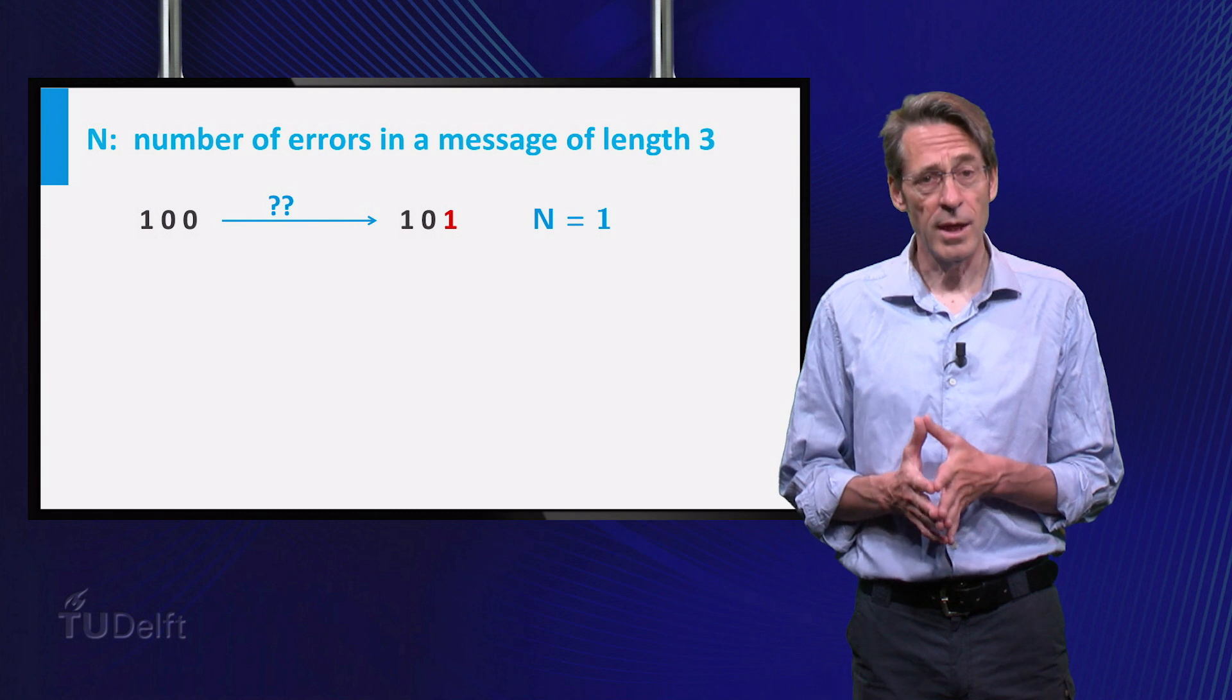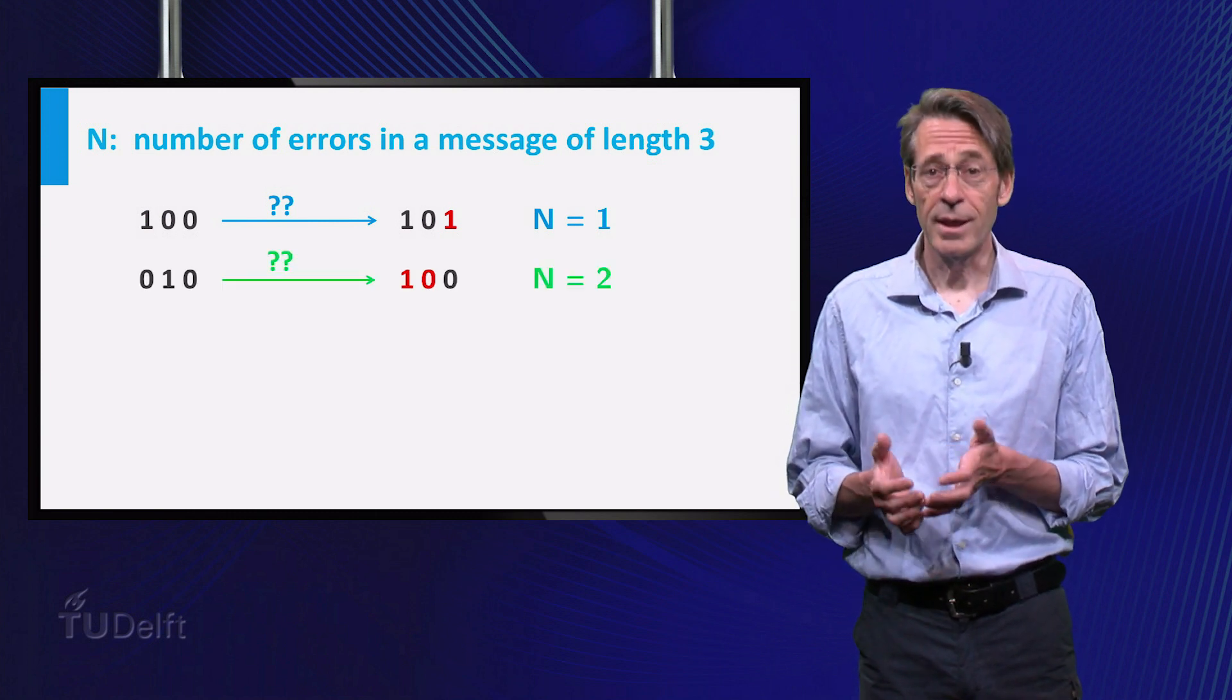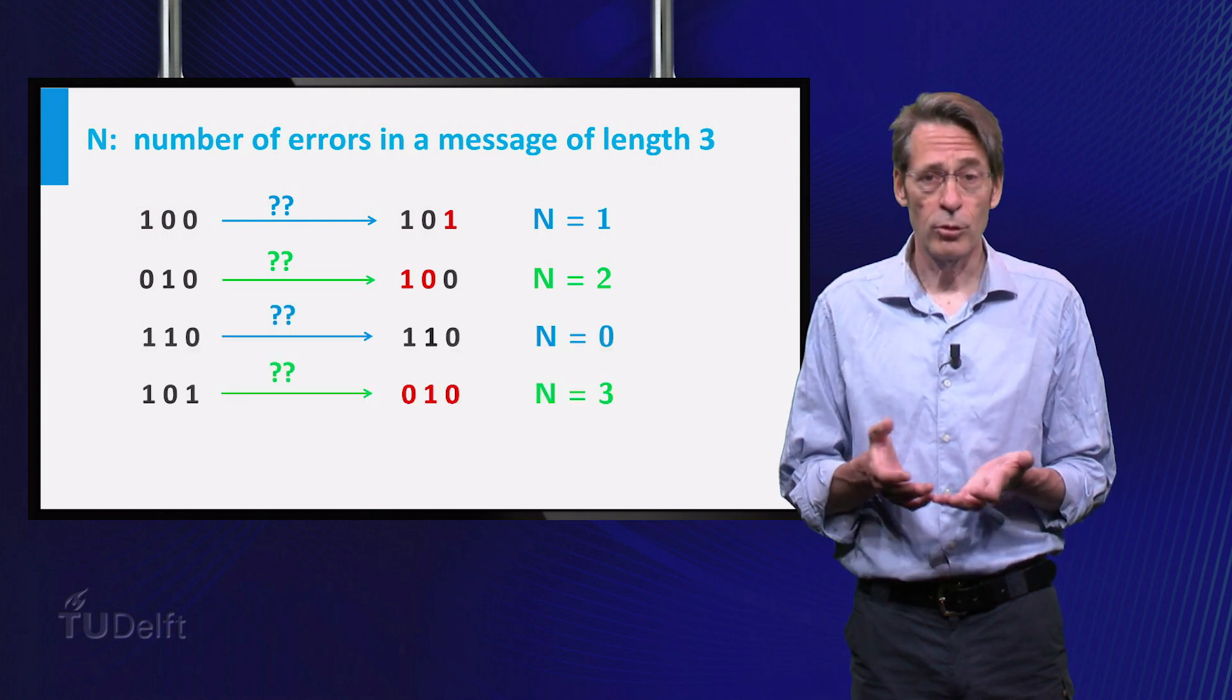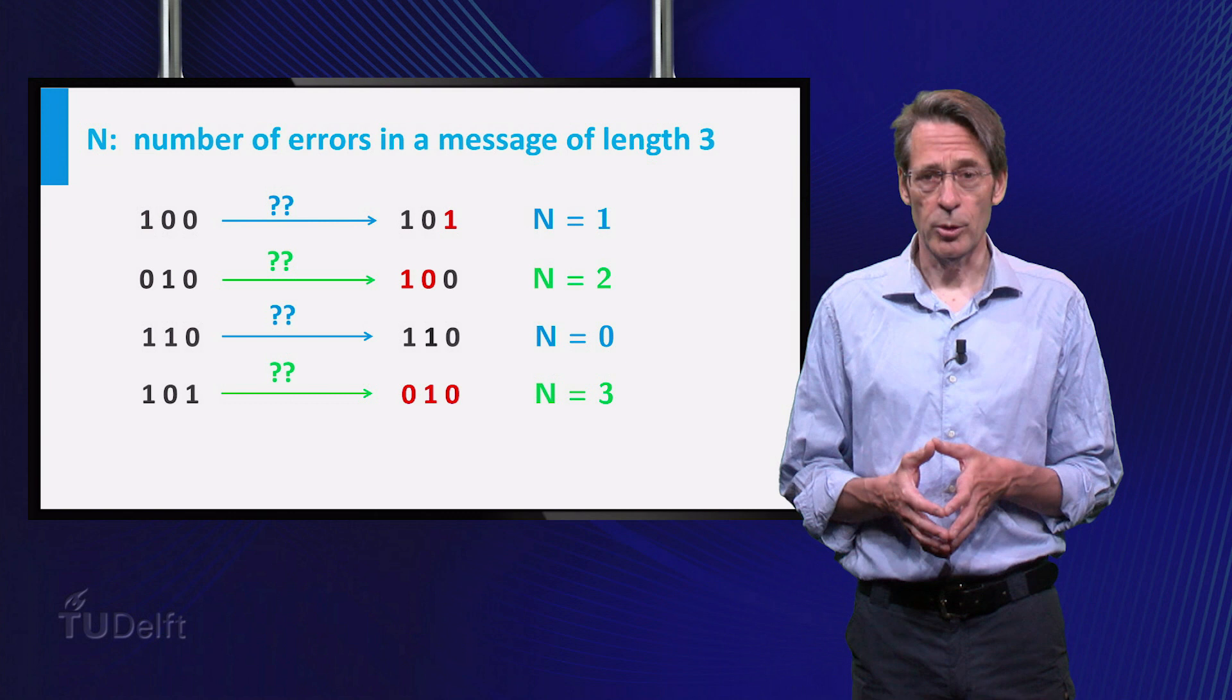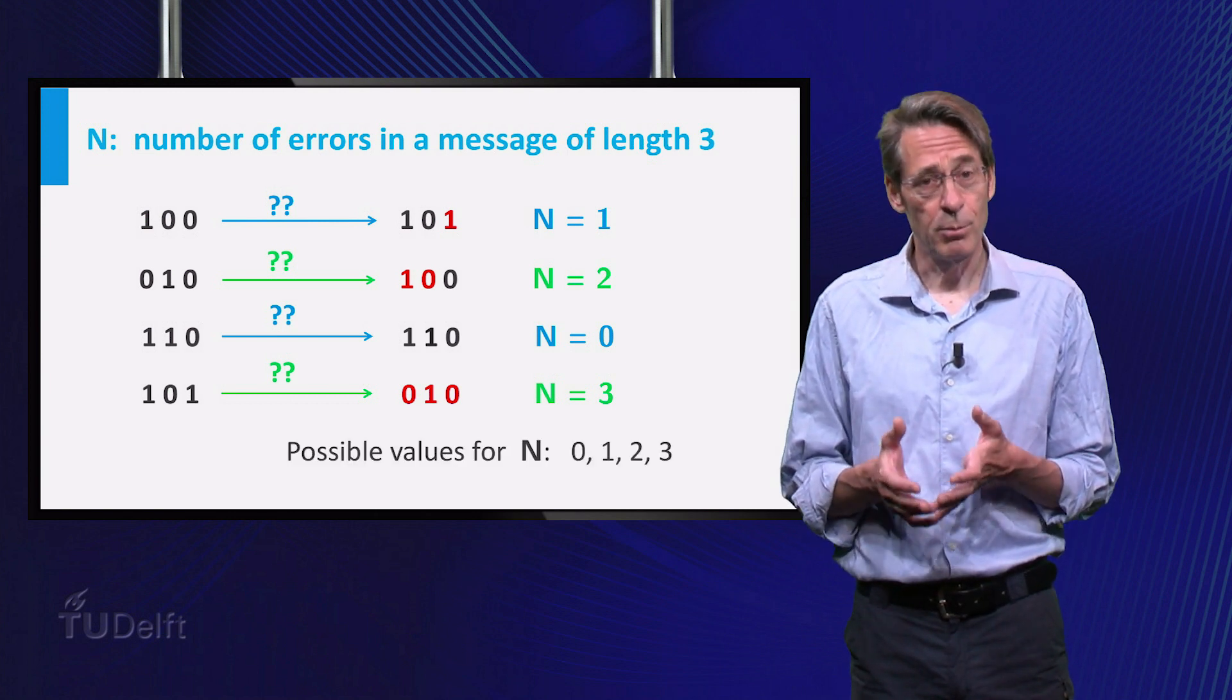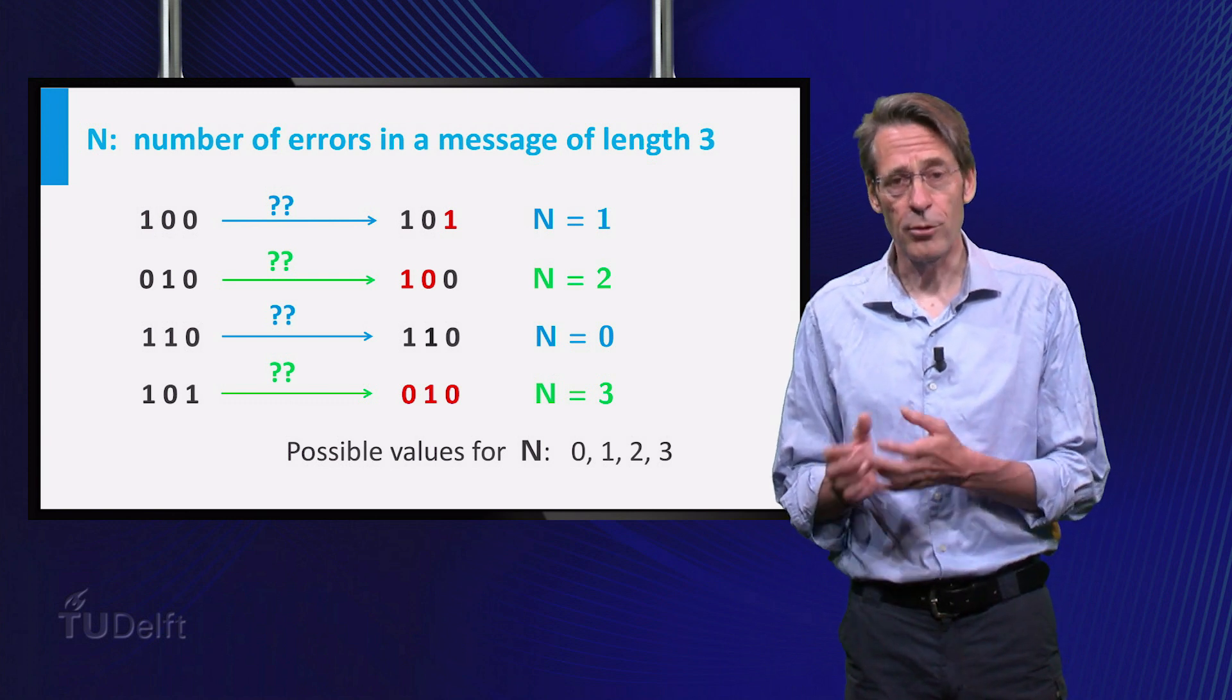What are the values that N can take on? Well, in a message of 3 bits there can be at most 3 errors of course, and any number from 0 to 2 is also possible. So the values that N can take on with a positive probability are 0, 1, 2 and 3.